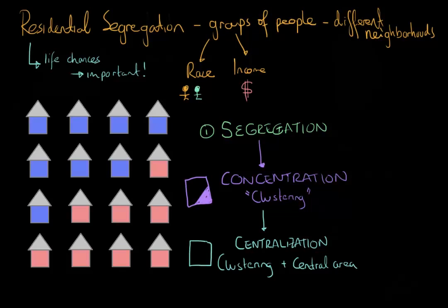And what would that look like? So in the central area, what would that look like in our chart? If the reds were very centrally located, like so, then this would be an example of centralization. So they're segregated, they're concentrated, and now they're in a central area. So this is centralization, another form of segregation.